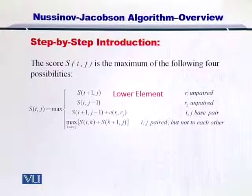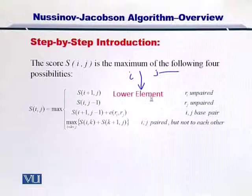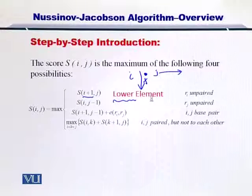S i plus one and j is your lower element. You are looking at i in the vertical axis and j in the horizontal axis. So essentially, i plus one would be the lower element. You have to look at the score in the element that is below your current position.